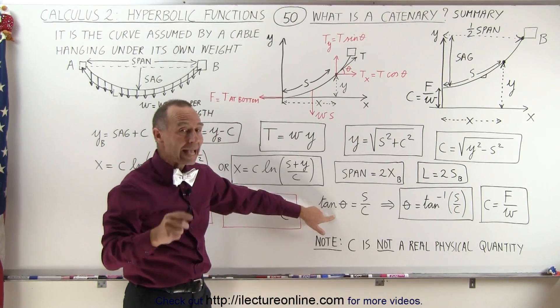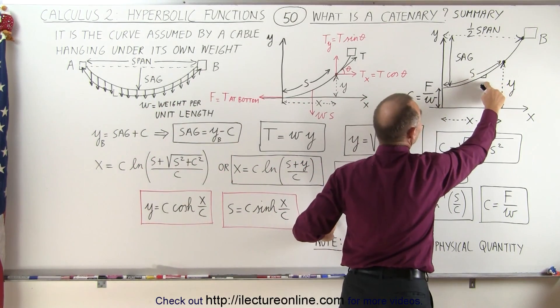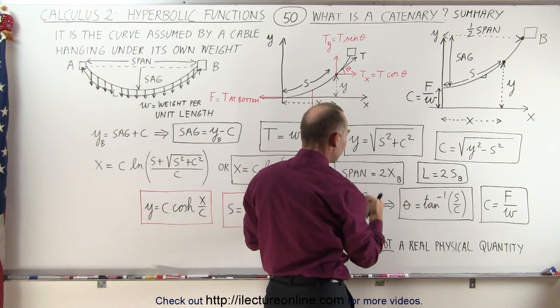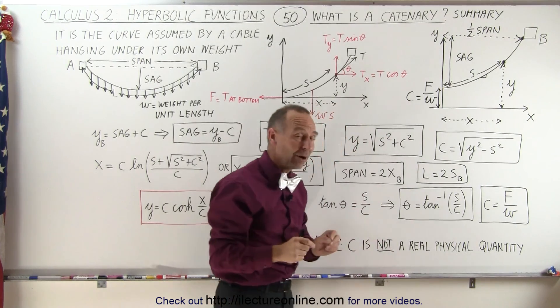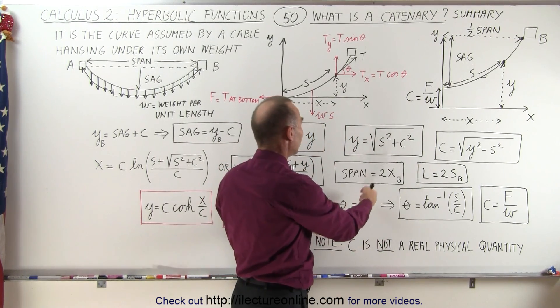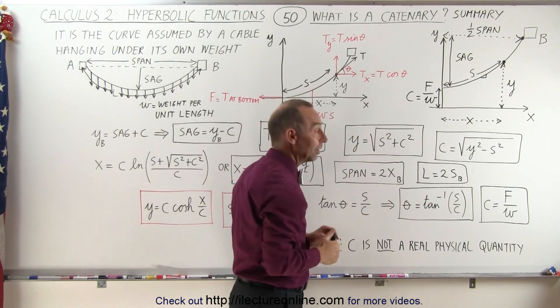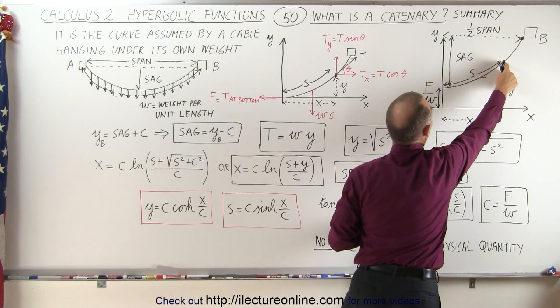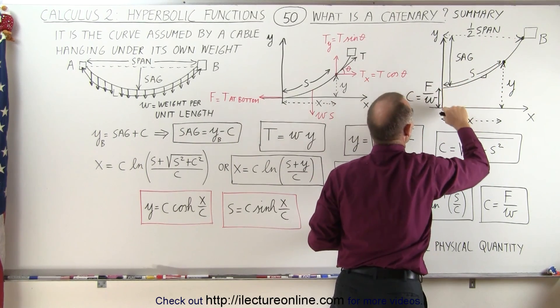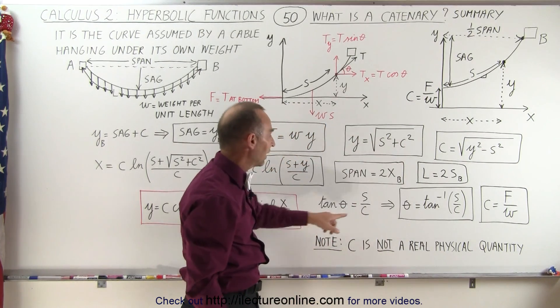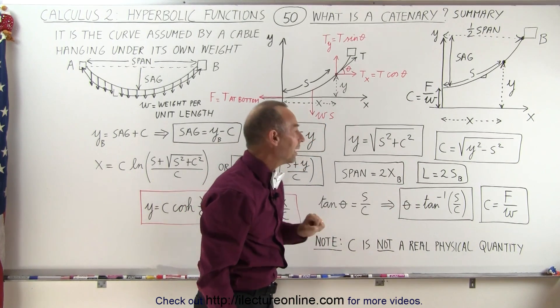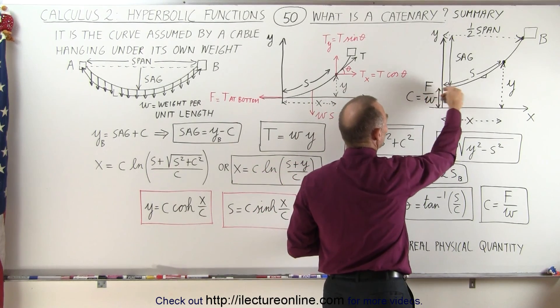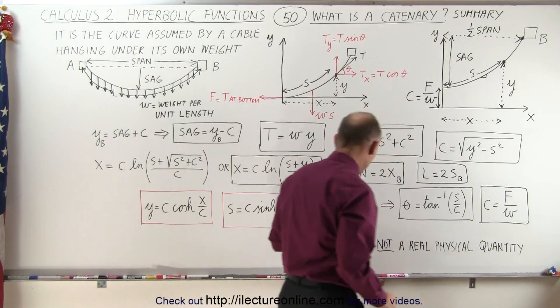Also realizing that the angle can be calculated at any point along the cable by simply taking the rise over the run, and the rise over the run can also be expressed as s over c. That's kind of an interesting part, is that even though the tangent of theta will be expressed in terms of dy dx anywhere along the cable, it can also be expressed in terms of the distance to that point on the cable s, and the distance from the origin to the bottom of the cable, and so we can then take the arctangent of that quantity, and remember also the relationship between c and the force at the bottom, or the tension at the bottom of the cable, divided by the weight per unit length.